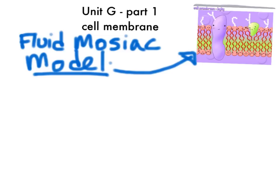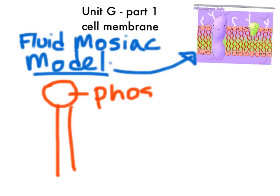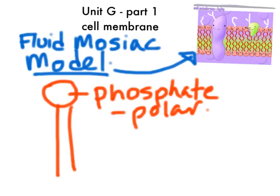To understand this model, we first must recall information from Unit C about phospholipid molecules. We need to go deeper with our understanding. This region is the phosphate, and this part has a polar personality. As we learned with water, anything polar is attracted to water, so this part is referred to as hydrophilic.